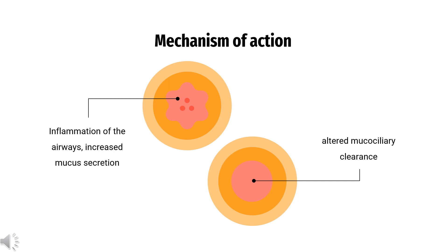Recent studies have demonstrated that bromexine inhibits the transmembrane serine protease 2 receptor, TMPRSS2, in humans. Activation of TMPRSS2 plays an important role in viral respiratory diseases such as influenza A and Middle East Respiratory Syndrome, MERS. Inhibition of receptor activation and viral entry by bromexine may be effective in preventing or treating various respiratory illnesses, including COVID-19.